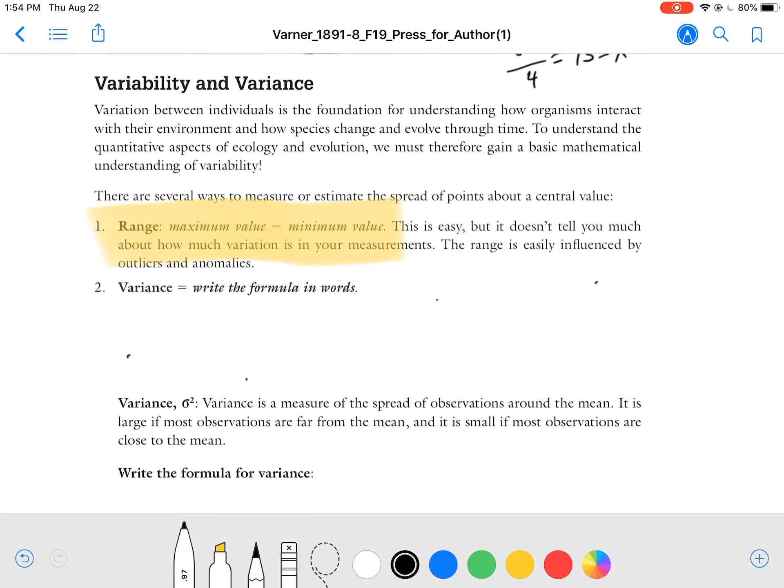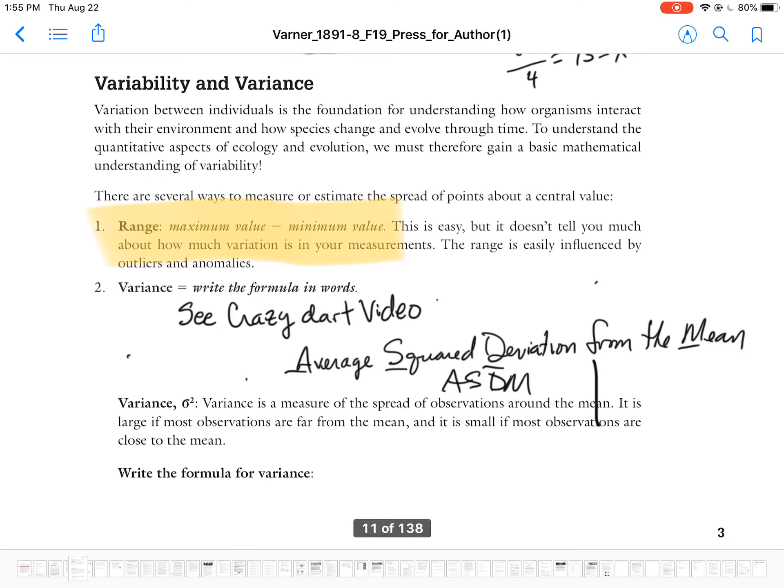And actually, you're going to have to see the crazy dart video. Crazy dart video shows you why we use the variance. All right, I'll shortcut to it. I'll just tell you that this is the average in words squared deviation from the mean ASDM, if you will. And that is really what the variance is. The formula for the variance can be written and we can do that for you here to get it done. I also do recommend you watch the video, the crazy dart video, because it does tell you quite a bit about the variance.